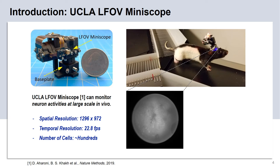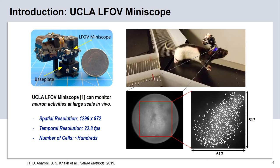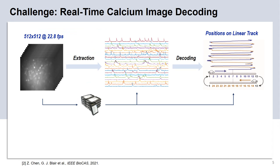For ease of computation, we cropped a 512 x 512 region from the image, and within this cropped region, over 700 cells can be detected. Recent study found that not only calcium fluorescence traces and cell activities can be extracted from the calcium images, but critical behavioral information — such as the animal's position on the linear track — can also be decoded.